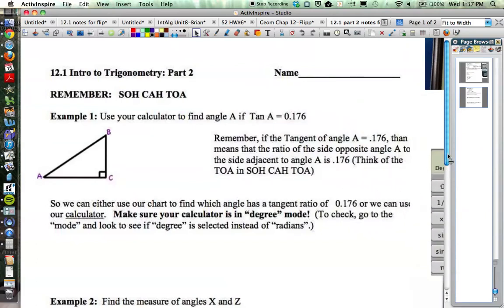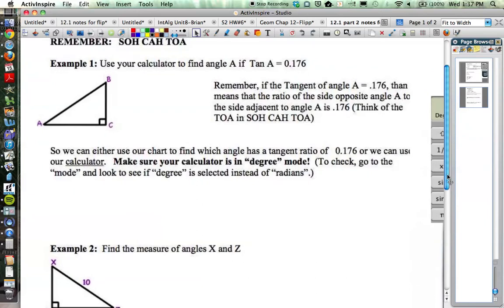Once we're in degree mode, now we can solve this. We have the tangent of A is equal to 0.176. In other words, what angle has a tangent of 0.176? Remember, tangent is opposite over adjacent. So what angle is the opposite over adjacent going to turn out to be 0.176? Now we can use our calculator to figure that out.